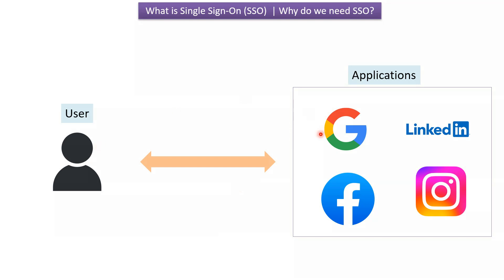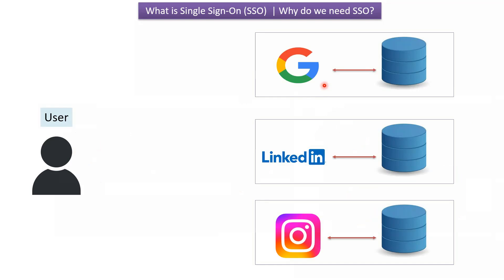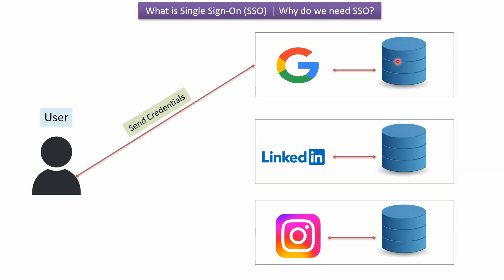In this use case, what does the user have to follow in order to access multiple applications if Single Sign-On is not there? Here you can see the different applications: Google, LinkedIn, and Instagram. If the user wants to access the Google service, then the user has to send credentials to the Google server, and the Google server will validate these credentials against the database.